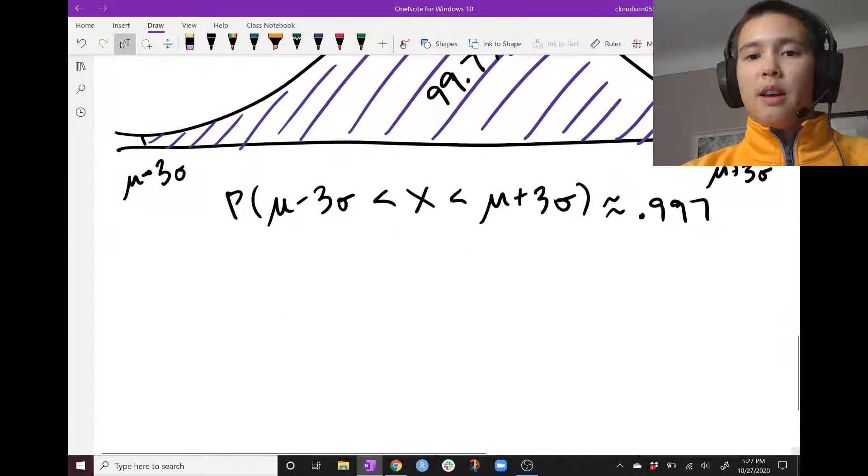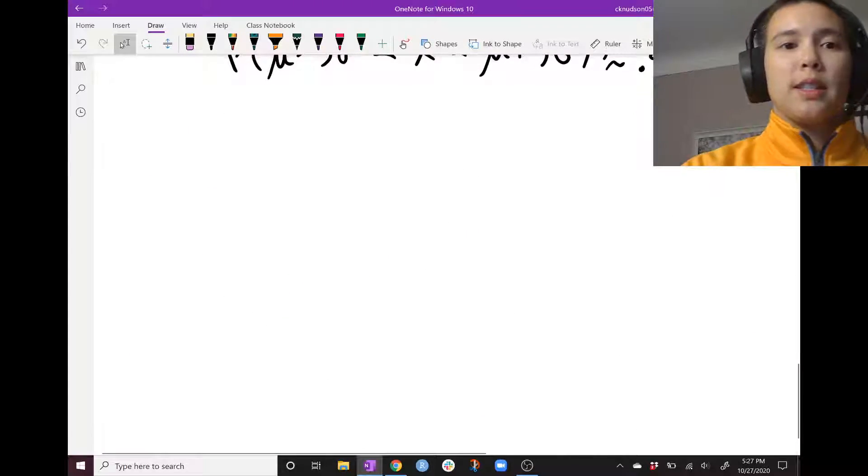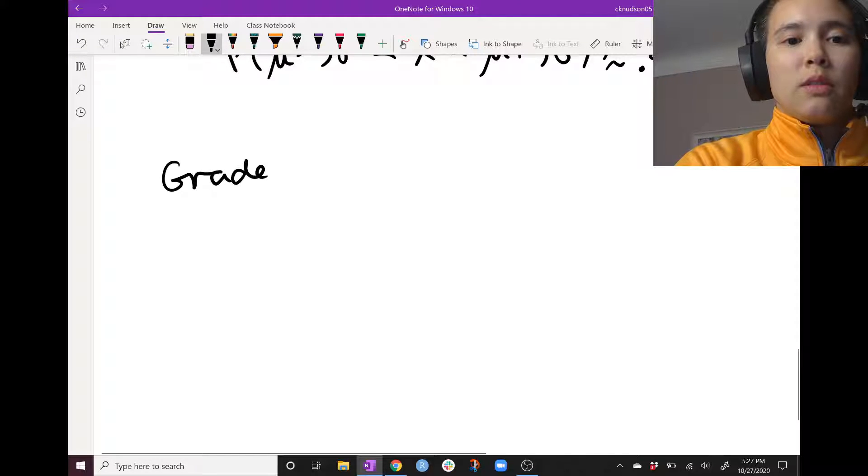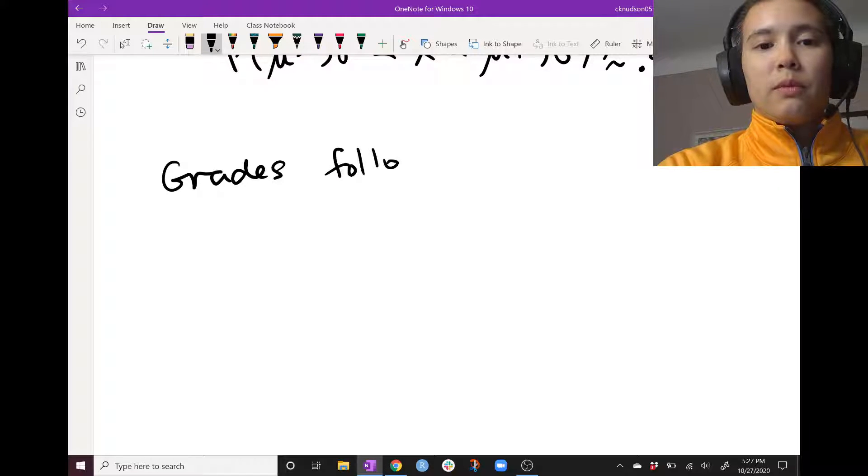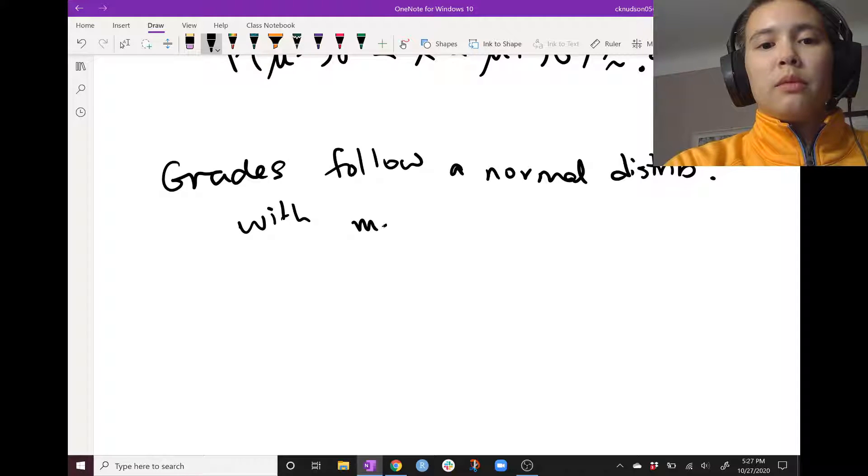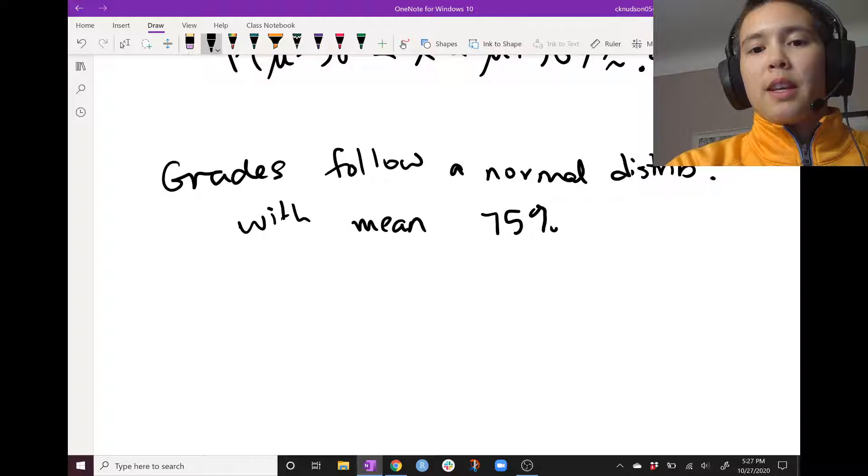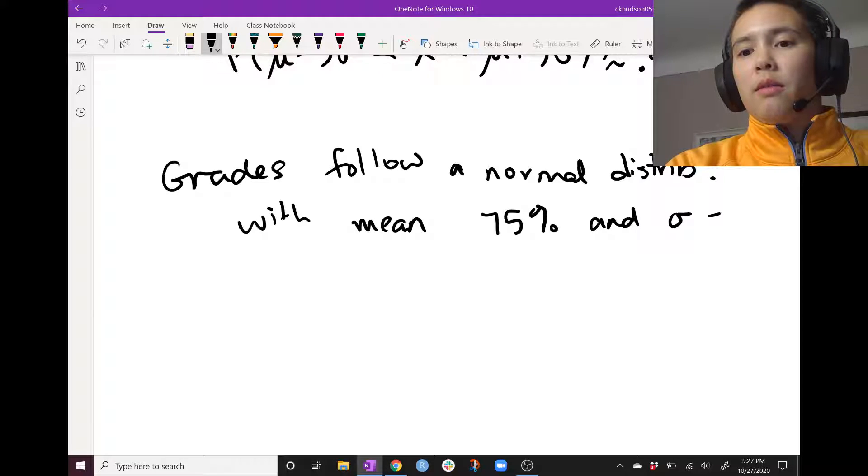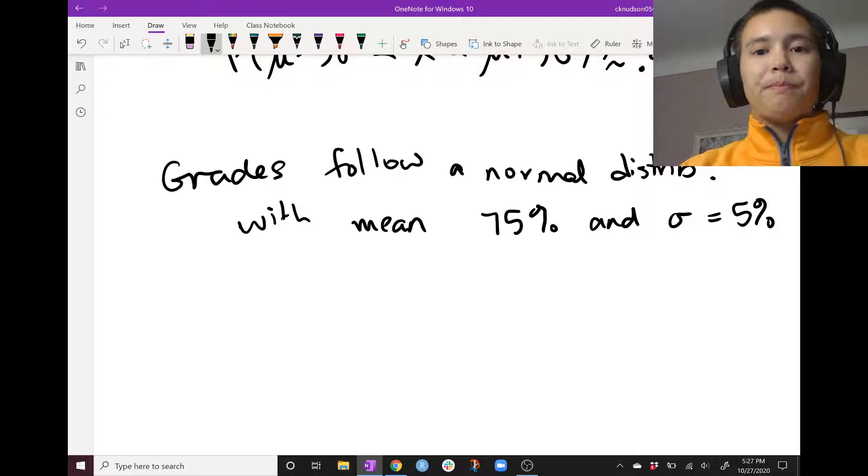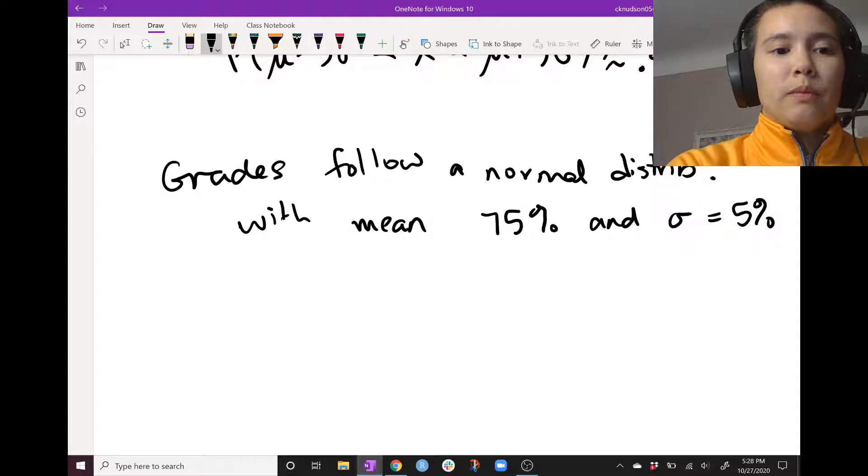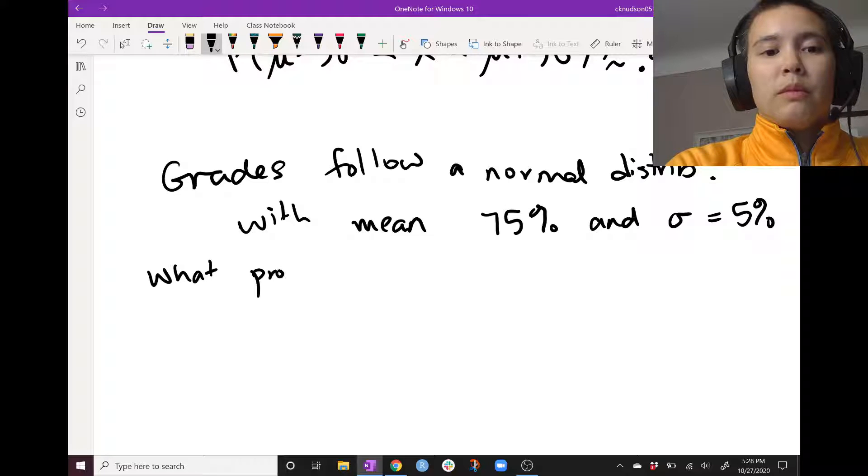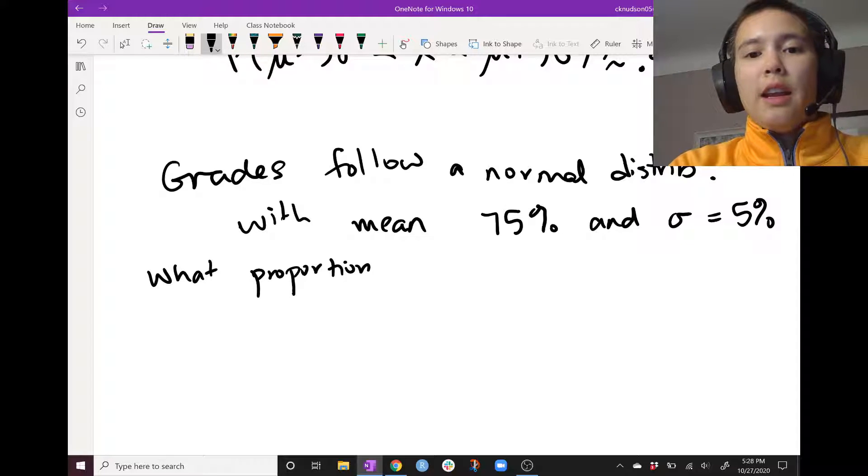Okay, so we can use this in a whole bunch of applications. So let's say that grades for an exam follow a normal curve with mean 75% and standard deviation 5%. Let's figure out the probability of students who get 80% or higher.